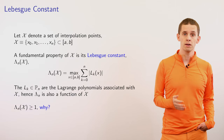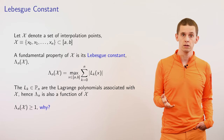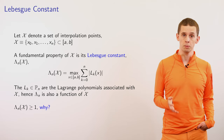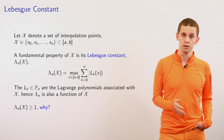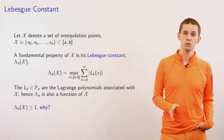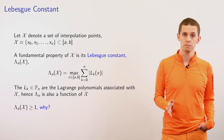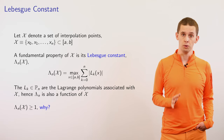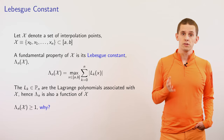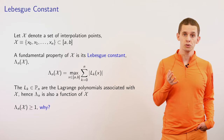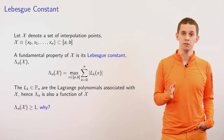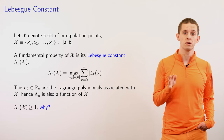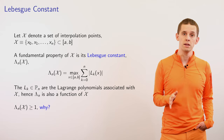Let script X be a set of interpolation points x0, x1, up to xn, defined over an interval from a to b. We're going to define the Lebesgue constant, lambda n of script X, to be the maximum over all x in [a, b] of the sum from k equals 0 to n of the magnitude of Lk of x, where Lk of x is the Lagrange interpolant for the kth interpolating point xk. It's not immediately obvious why this definition is useful, but we'll see that it turns out to be very effective for telling us about interpolation accuracy. We can also see that the Lebesgue constant has to be greater than or equal to 1 for any set of interpolation points.